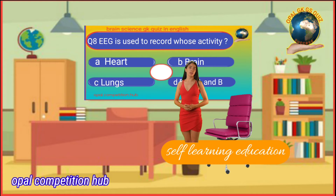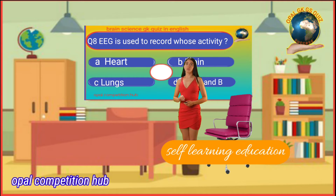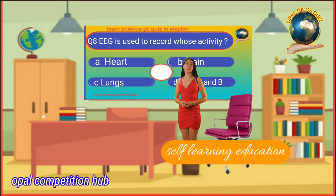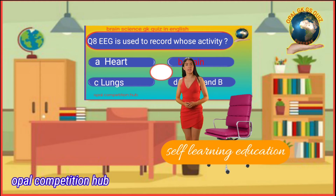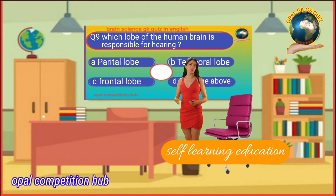Question number 8: EEG is used to record whose activity? Option A: Heart. Option B: Brain. Option C: Lungs. Option D: Both A and B. Your time starts now. Your answer will be Option B: Brain. Temporal lobe.